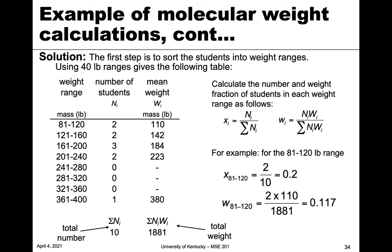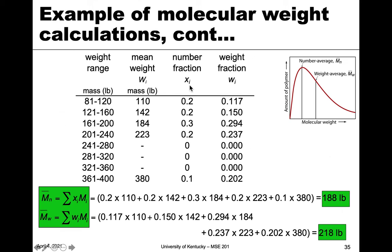With the number fractions and weight fractions calculated, we sum x_i times M_i (here called w_i in our example) for each range to get the number-averaged weight of 188 pounds. Doing the same calculation with the weight fractions gives us 118 pounds for the weight-averaged value — and as stated, the weight-averaged is higher than the number-averaged.